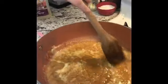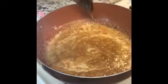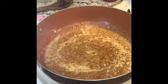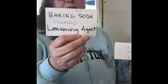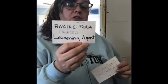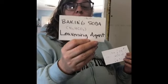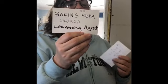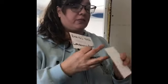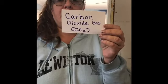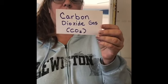Now we're going to add baking soda, which is a leavening agent and it's also acidic. You can see the chemical formula there. When you add baking soda, which is an acid, to something like sugar or a liquid, it creates carbon dioxide gas.